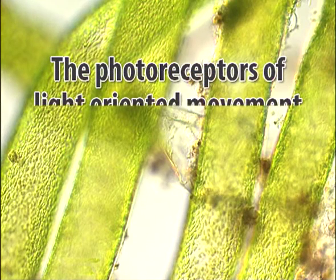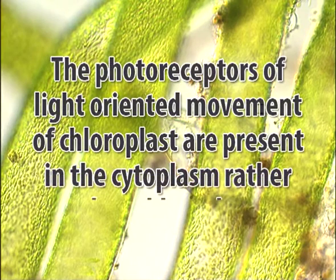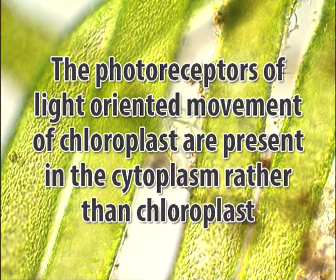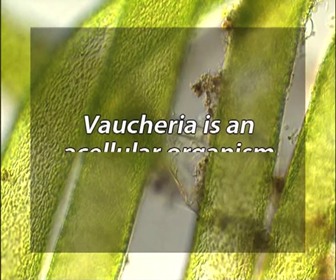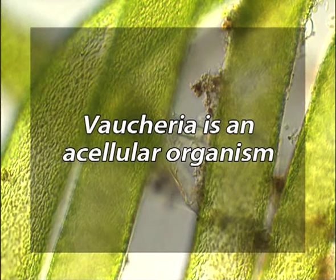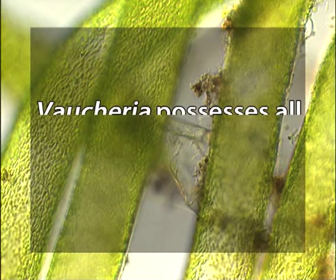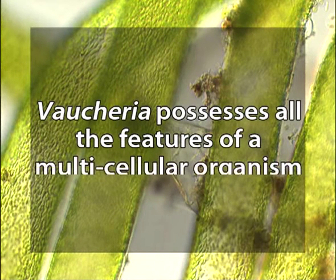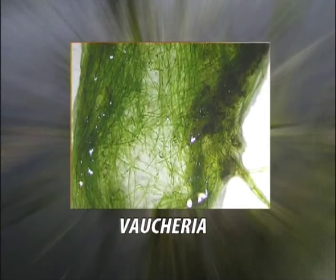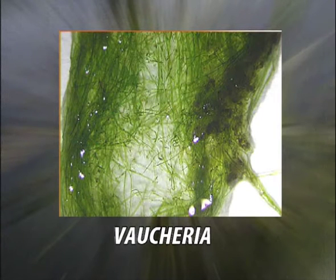The photoreceptors of light-oriented movement of chloroplasts are present in the cytoplasm rather than in the chloroplasts. Vaucheria is an acellular organism — it is wrong to call it unicellular, as it possesses features of a multicellular organism. In unicellular forms, growth consists of an increase in size of the entire cell; however, in Vaucheria, growth is apical. Therefore, it is appropriate to call Vaucheria an acellular, siphonous organism rather than a unicellular or multicellular form.